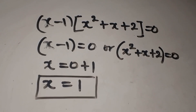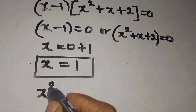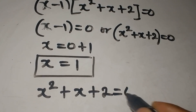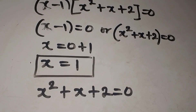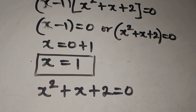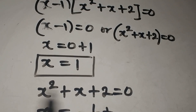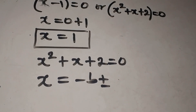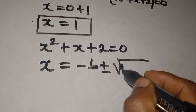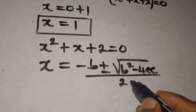Now picking up x squared plus x plus 2 equals 0, this is a quadratic. We'll use the quadratic formula: x equals minus b plus or minus the square root of b squared minus 4ac, all divided by 2a.